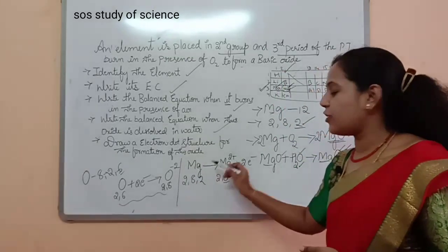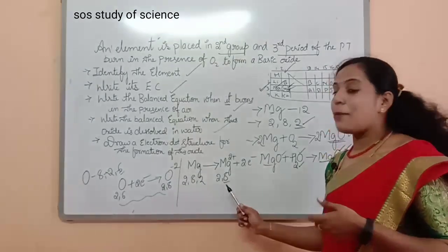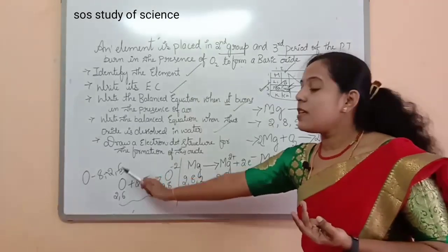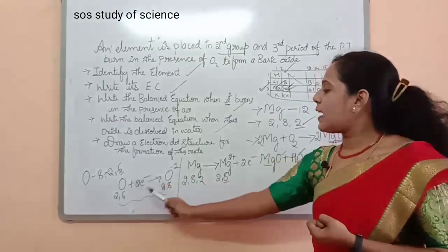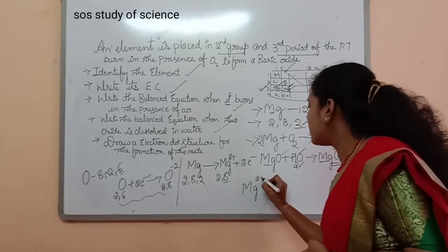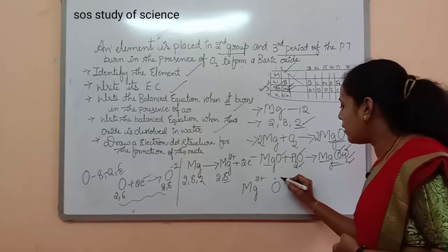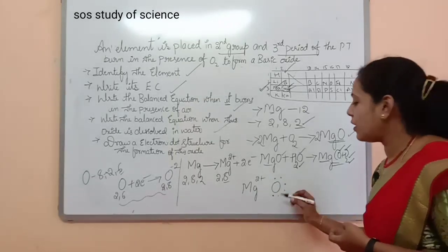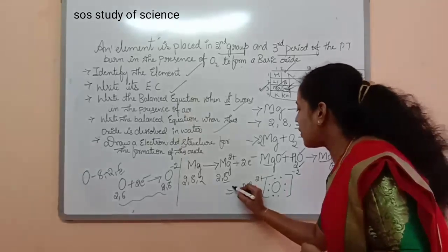To summarize the electron dot structure: magnesium has electronic configuration 2, 8, 2 and can easily lose 2 electrons, thereby becoming stable. Oxygen needs 2 electrons because it has 6 valence electrons in its outermost orbital. Oxygen gains 2 electrons from magnesium, becoming O²⁻. Magnesium is Mg²⁺. Oxygen starts with 6 electrons in its dot structure and by receiving 2 electrons from magnesium it becomes O²⁻. This is how we write the electron dot structure for magnesium oxide.